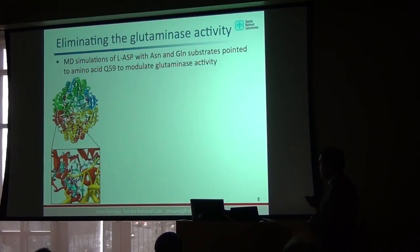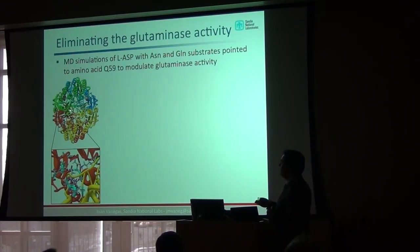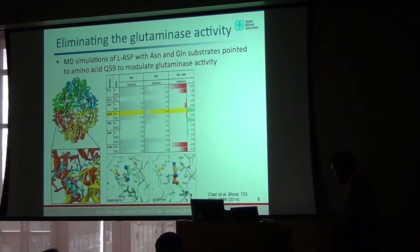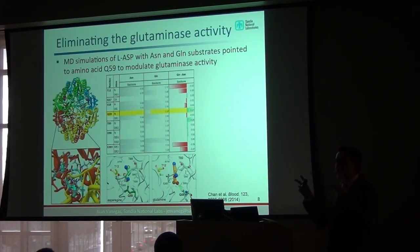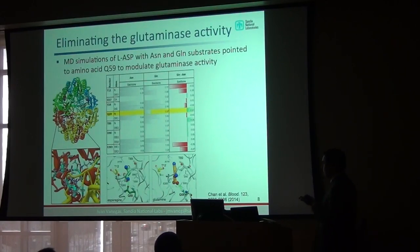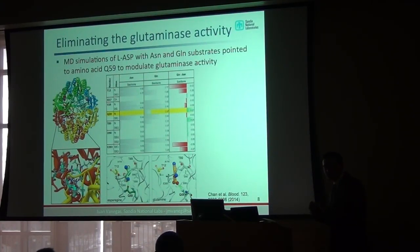Our colleagues at the University of Maryland started doing molecular dynamics simulations of the enzyme. The enzyme is a homotetramer — four identical protein subunits — with the active site at the interface between two subunits. We looked at the substrate interactions. Using MD simulations, we examined contact interactions between all amino acids near the active site for both asparagine — the substrate we want to keep — and glutamine — the one we want to eliminate.